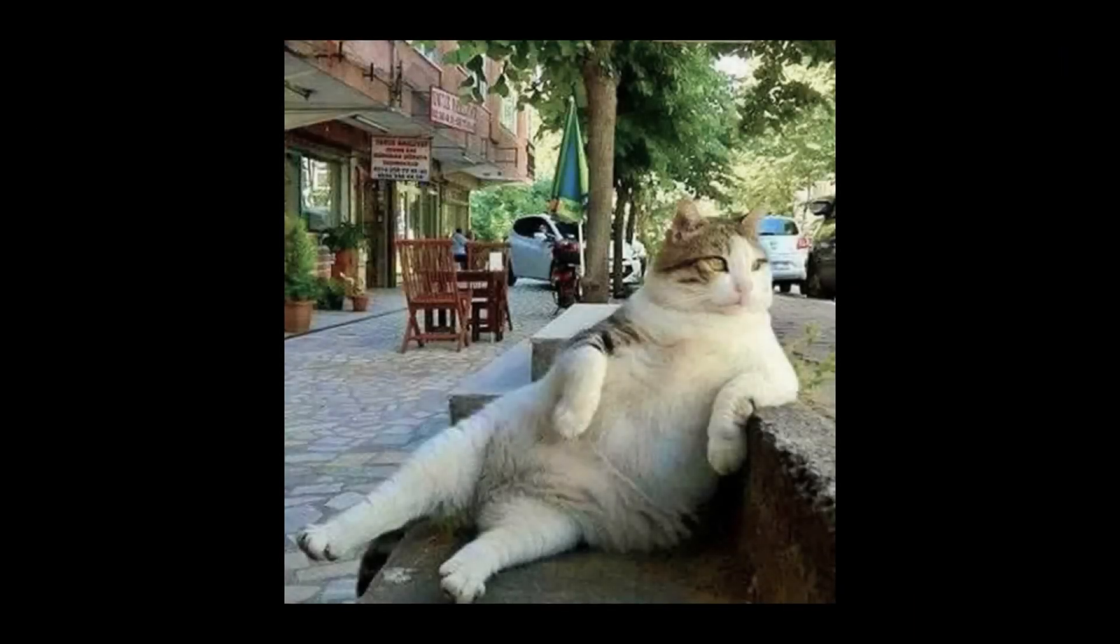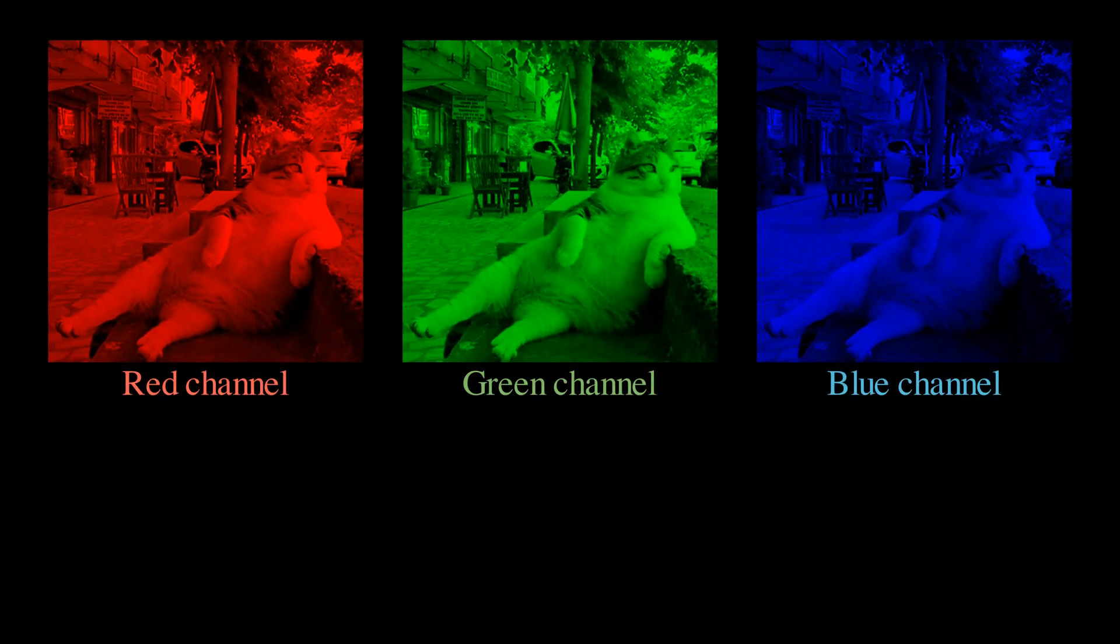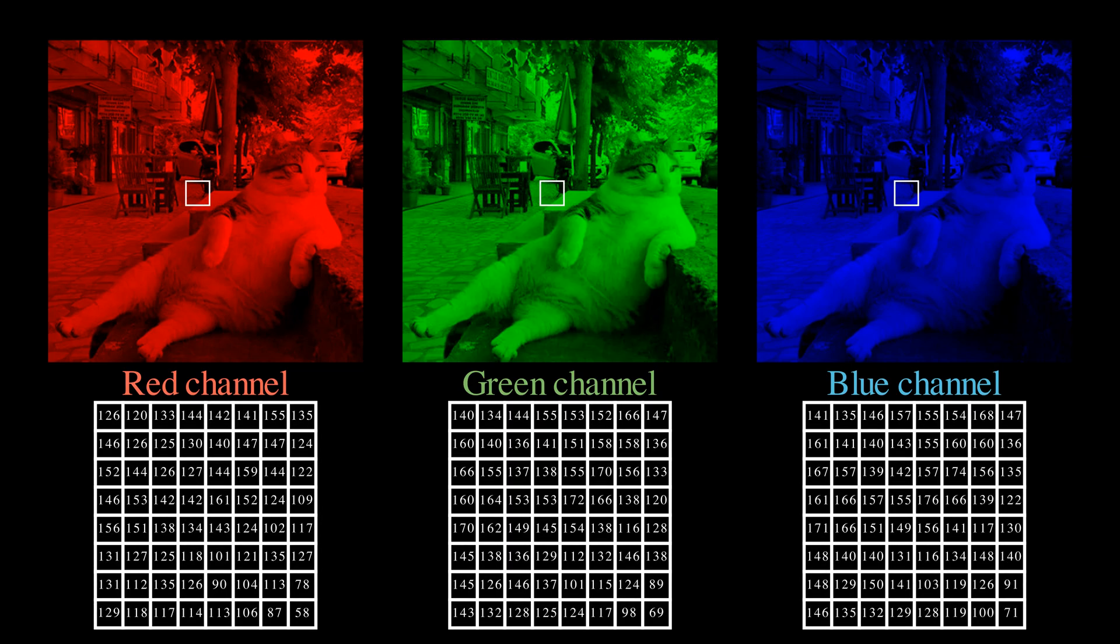To our computer, a color image is made out of red, green, and blue channels. If we look closer, you will see it's just a grid of numbers, ranging from 0 to 255, representing color intensity.